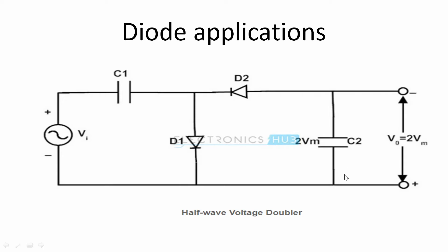Another application is a voltage doubler — a step-up doubler circuit built using capacitors and diodes. This configuration only allows charging in one direction, which increases the charging voltage, effectively doubling your output voltage.